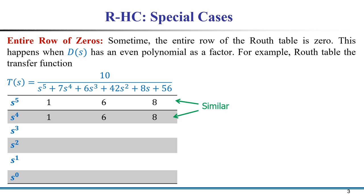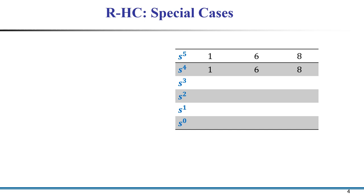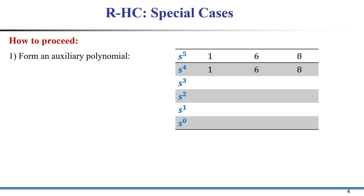Both rows are the same, so the s³ row will definitely become zero. This is the problem. To handle this problem, we proceed by forming an auxiliary equation using the coefficients of the row above the zero row.